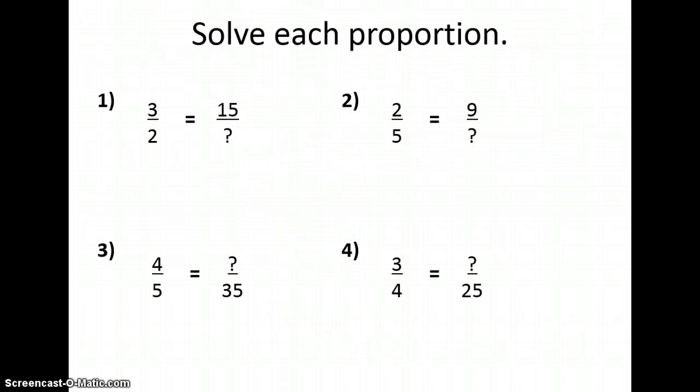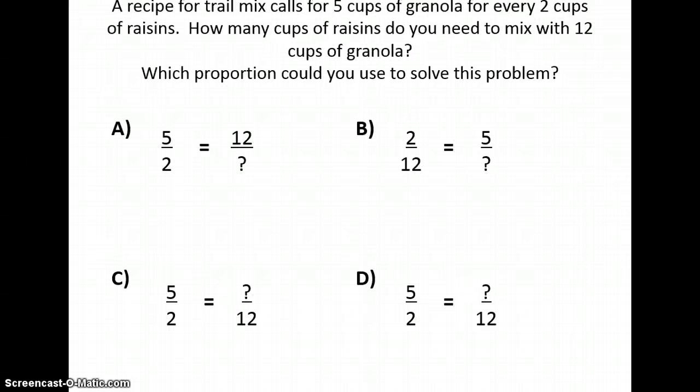Now it's your turn. Pause the video and answer one through four in the work section of your WSQ. When you are finished, hit play again, because you have one more problem to complete. For this problem, you are going to choose which proportion you would use to solve the word problem given. Once you've chosen a proportion, go ahead and solve it.